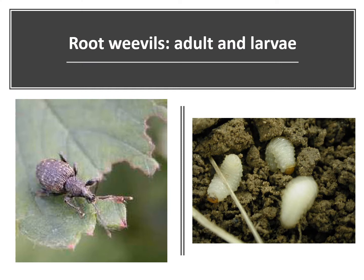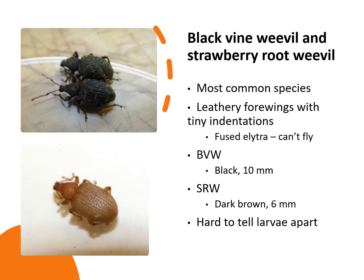Adults have long probing mouthparts — the snout — are wingless, feed at night, and cause the notching I've mentioned. They typically emerge in early to mid-June. There's only one generation per year, but females can lay up to 200 eggs in the soil, so populations can build rapidly within two years.